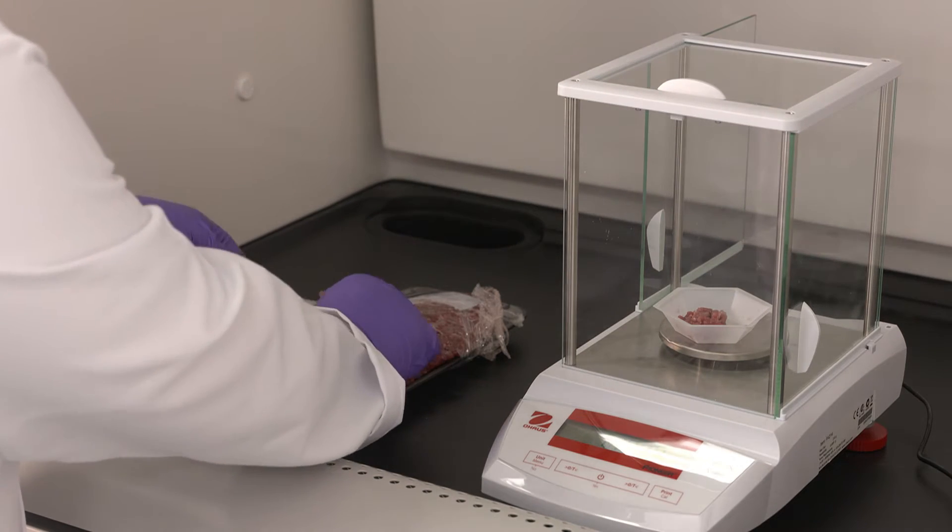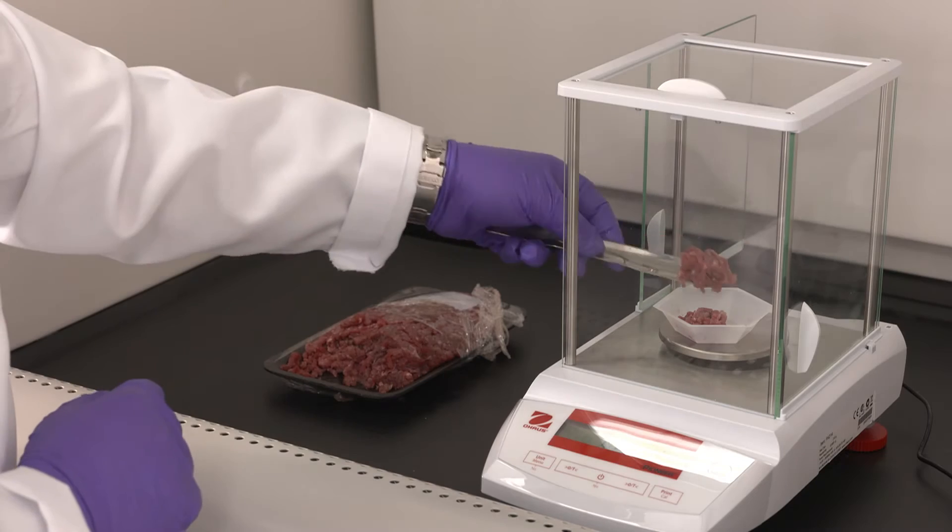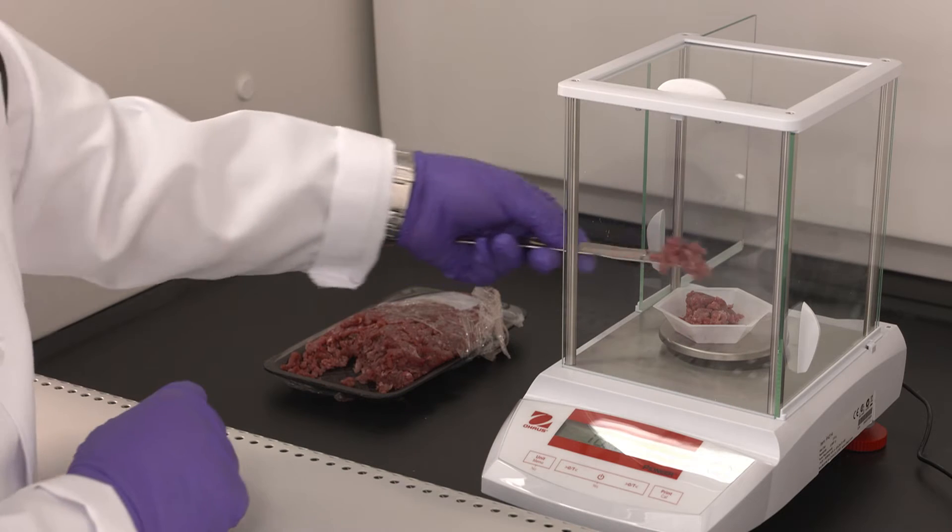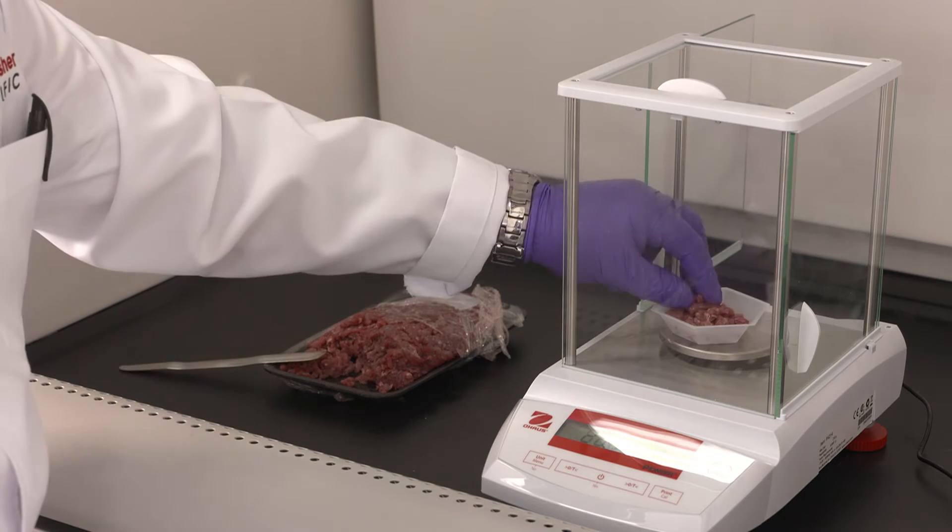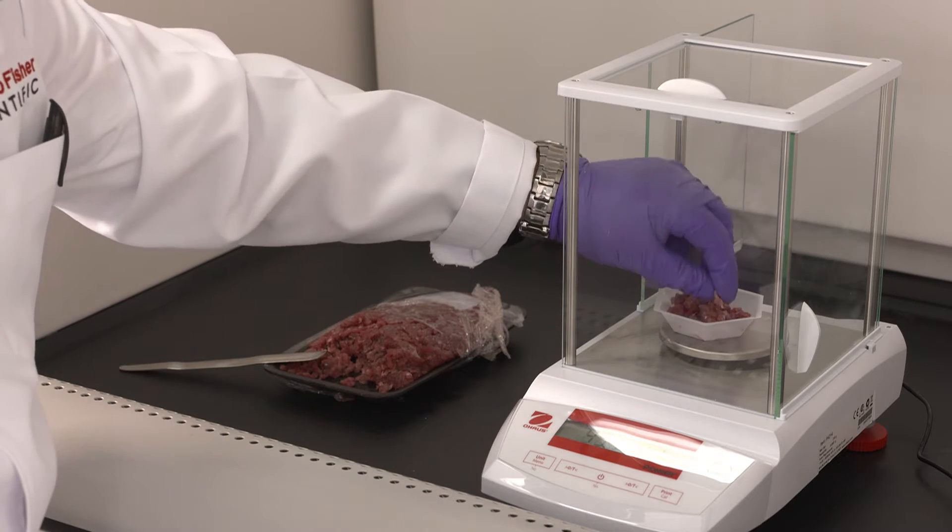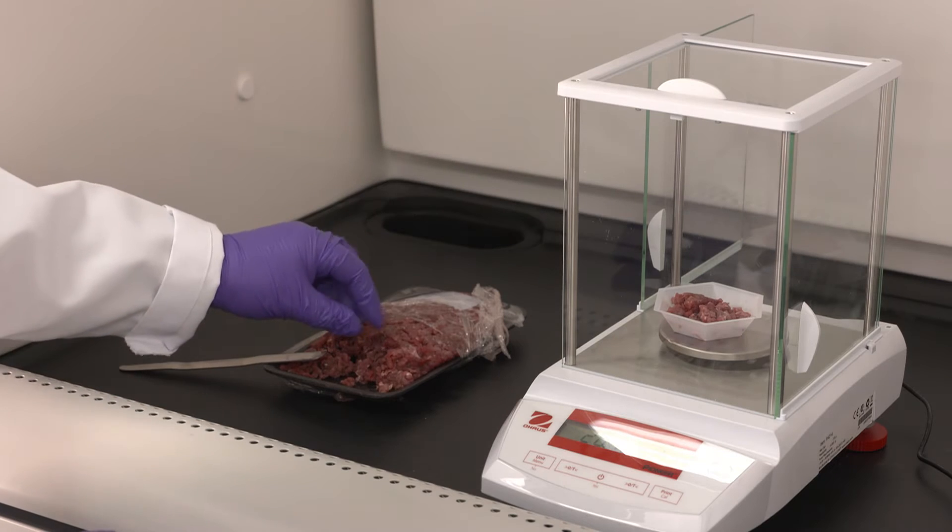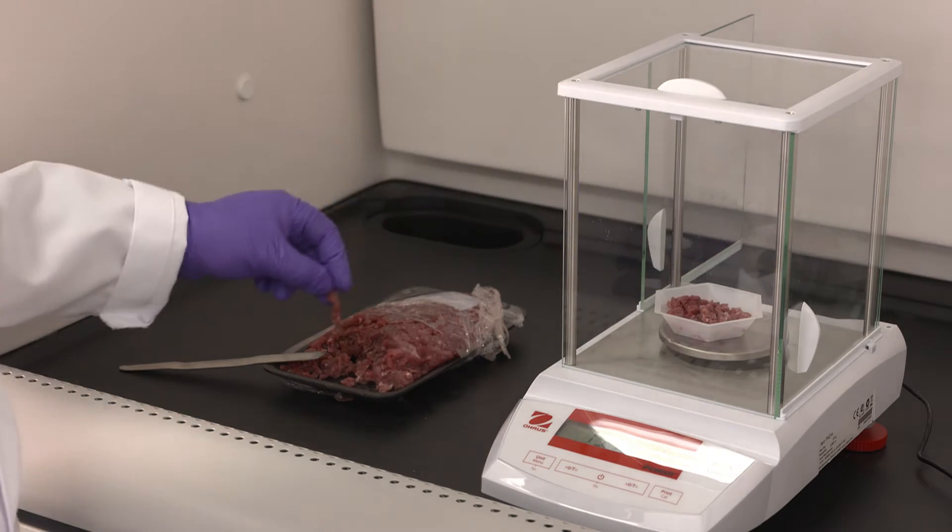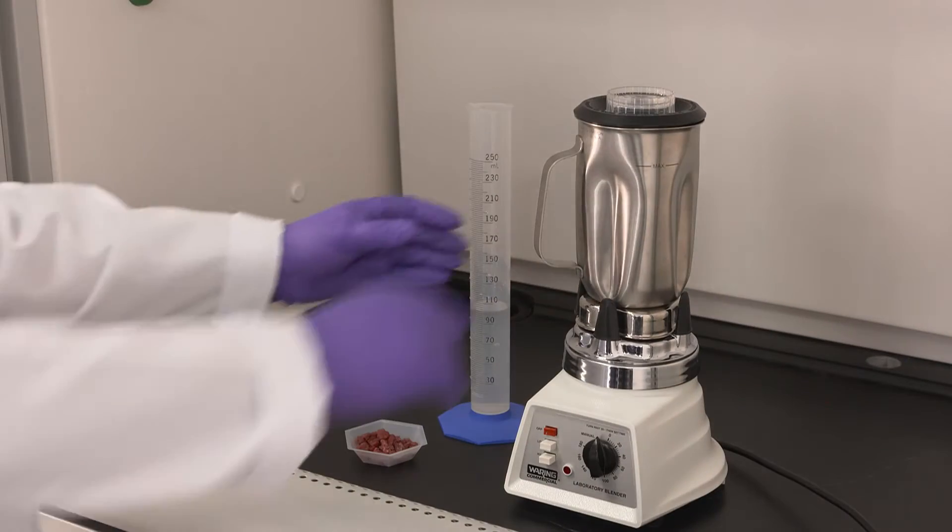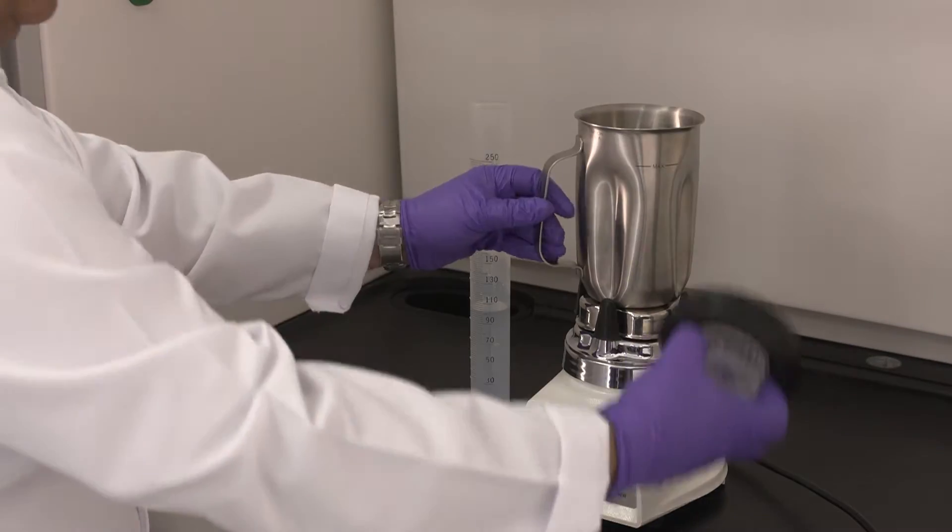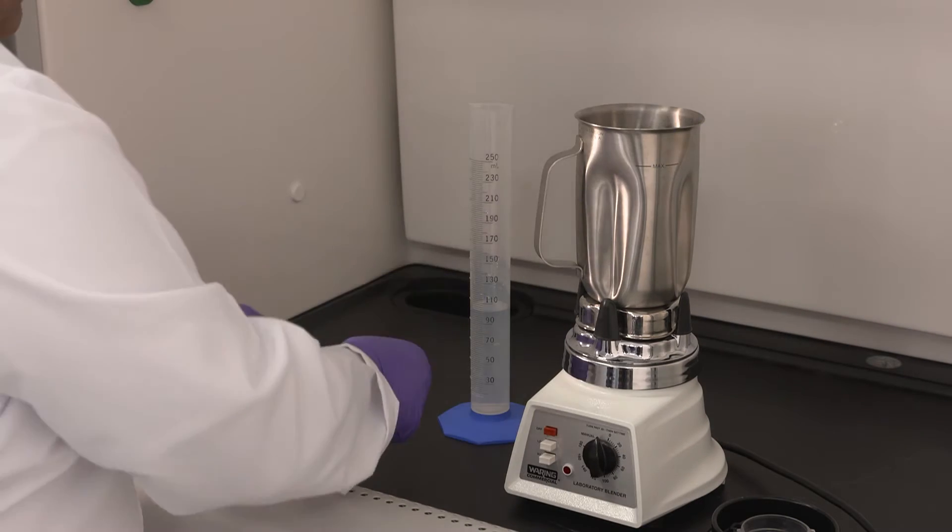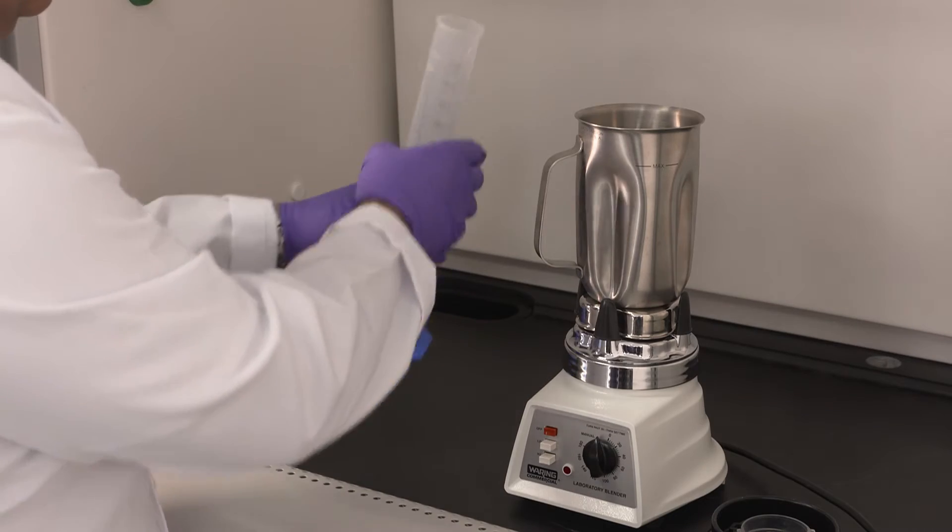That will be the following step where we will homogenize the meat in water at a ratio of 1 to 5. When it's weighed precisely, we can add the precise amount of water and adjust the volume according to the weight. We will put the meat in the blender, add 100 ml of water, and turn on the mixer for 2 minutes.